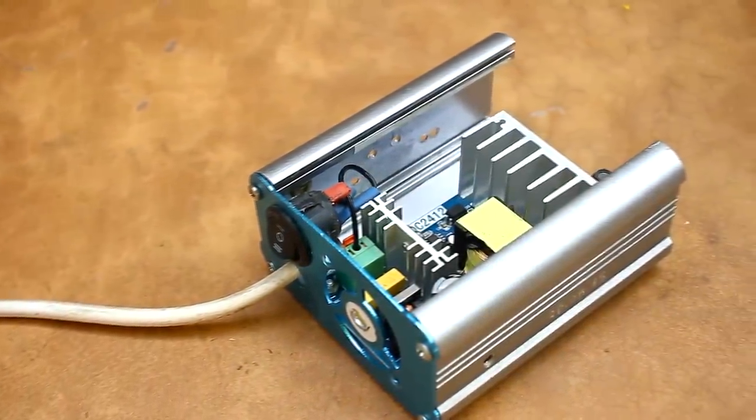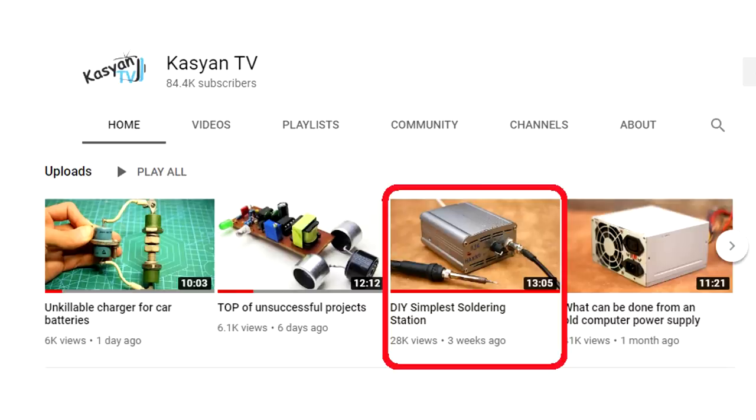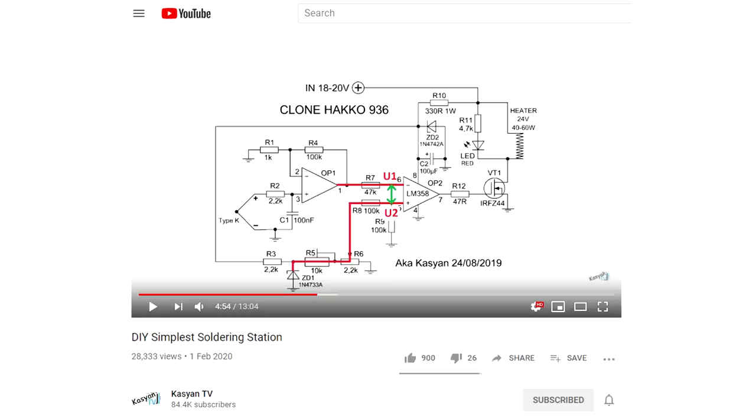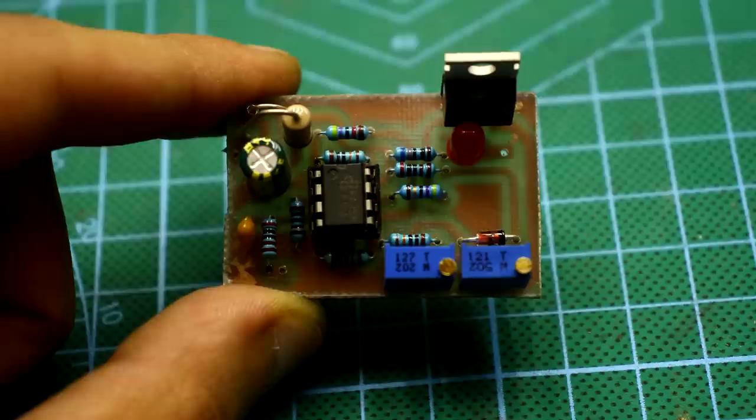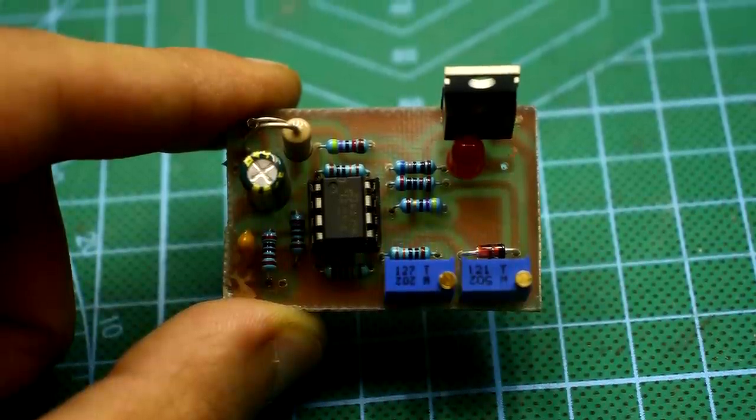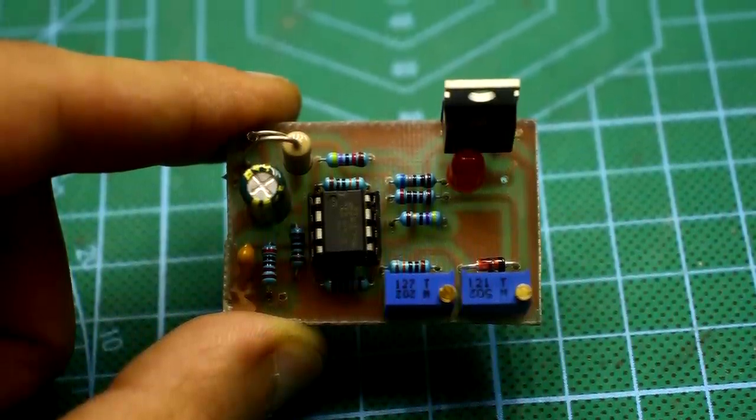Hi friends! Some time ago I released a video in which I showed a simple analog soldering station, a clone of the famous Hakko 936 station.